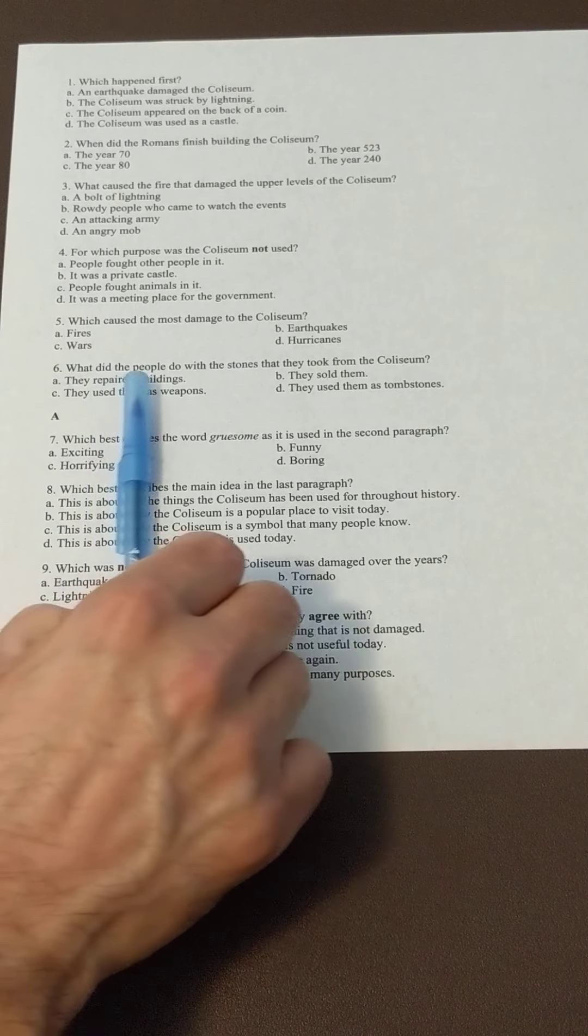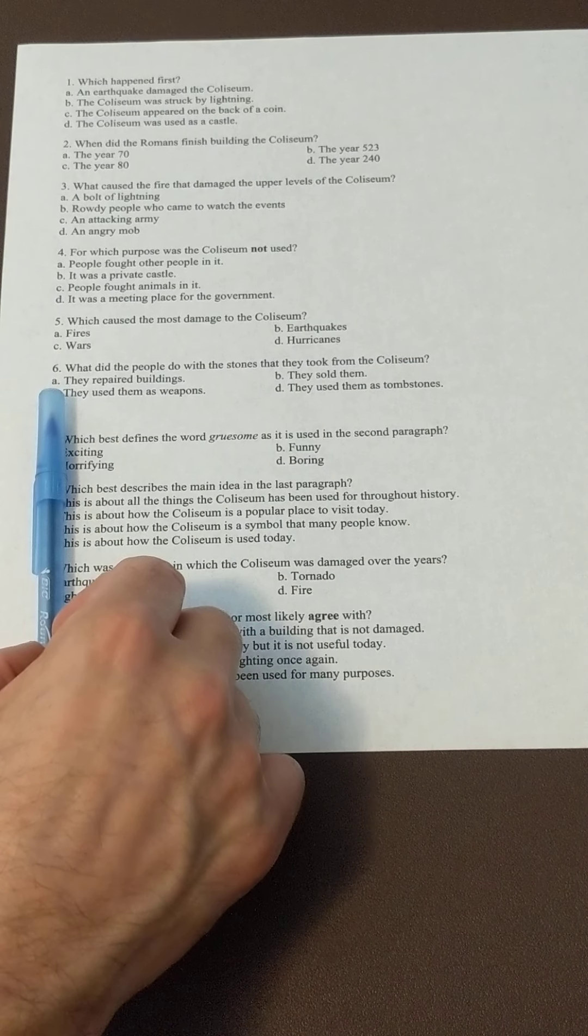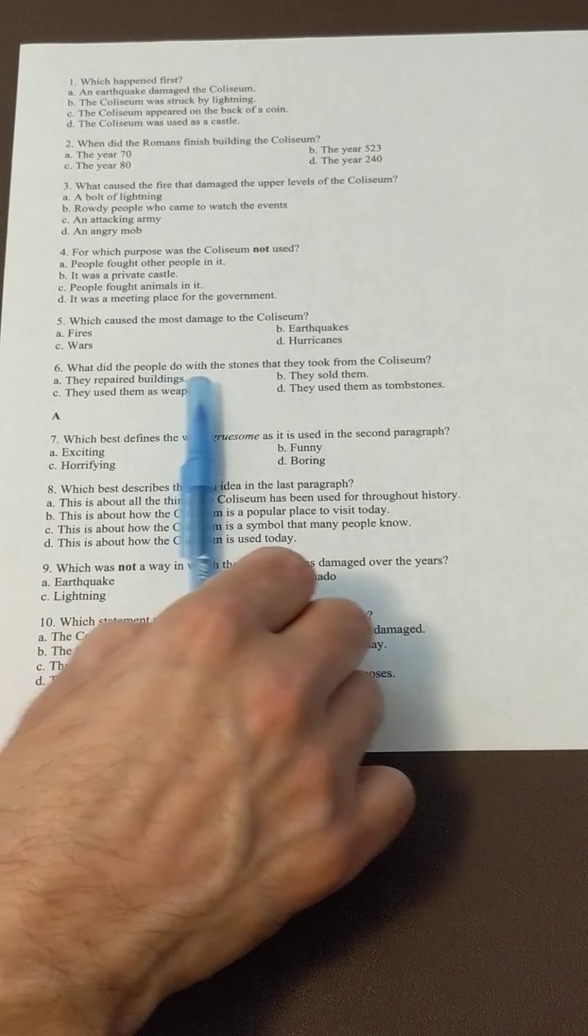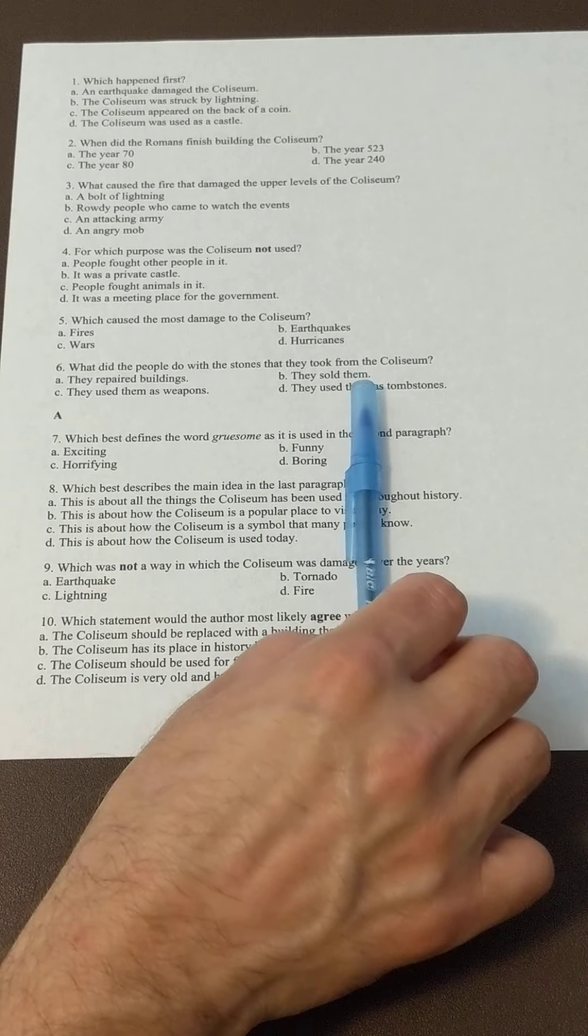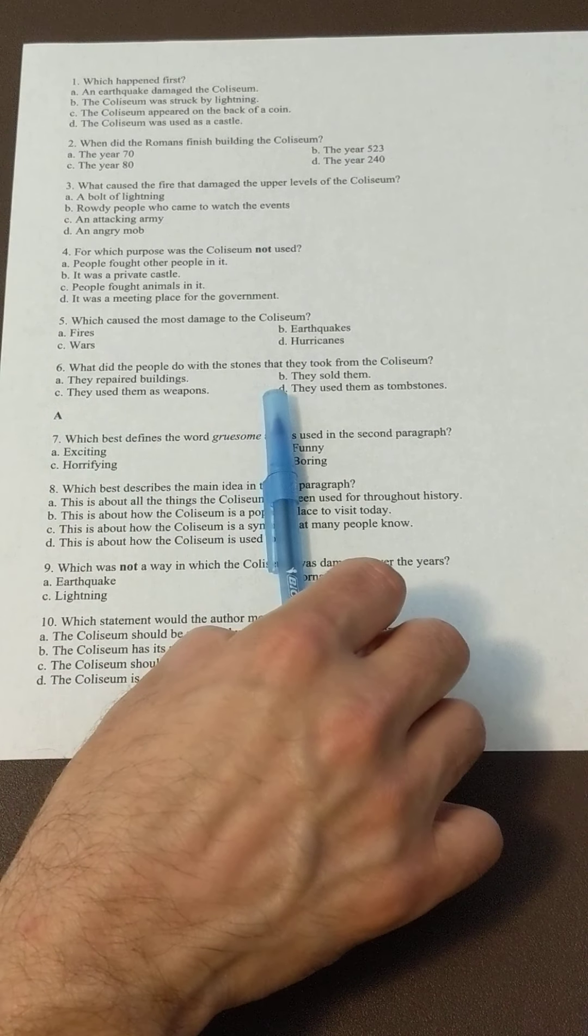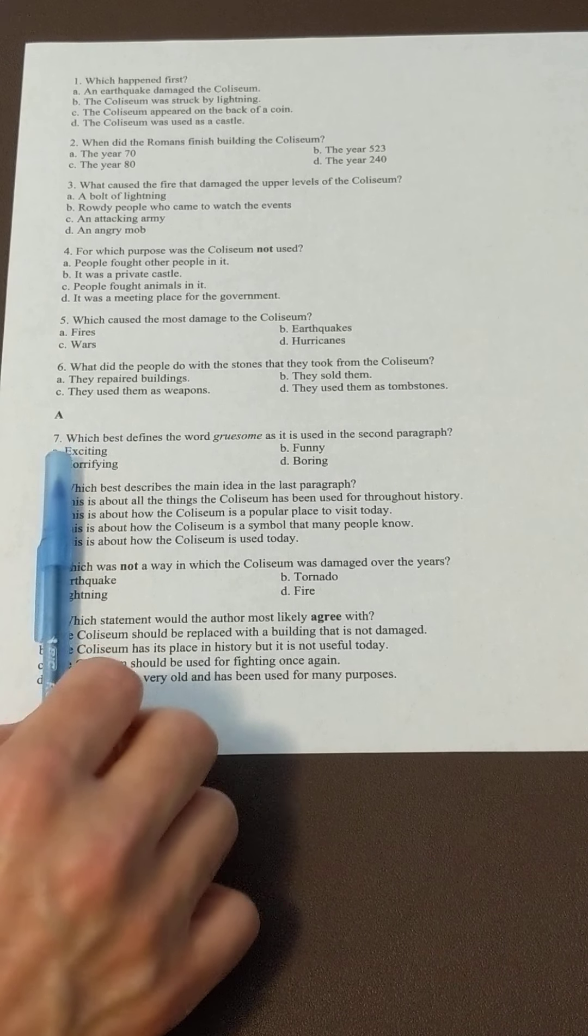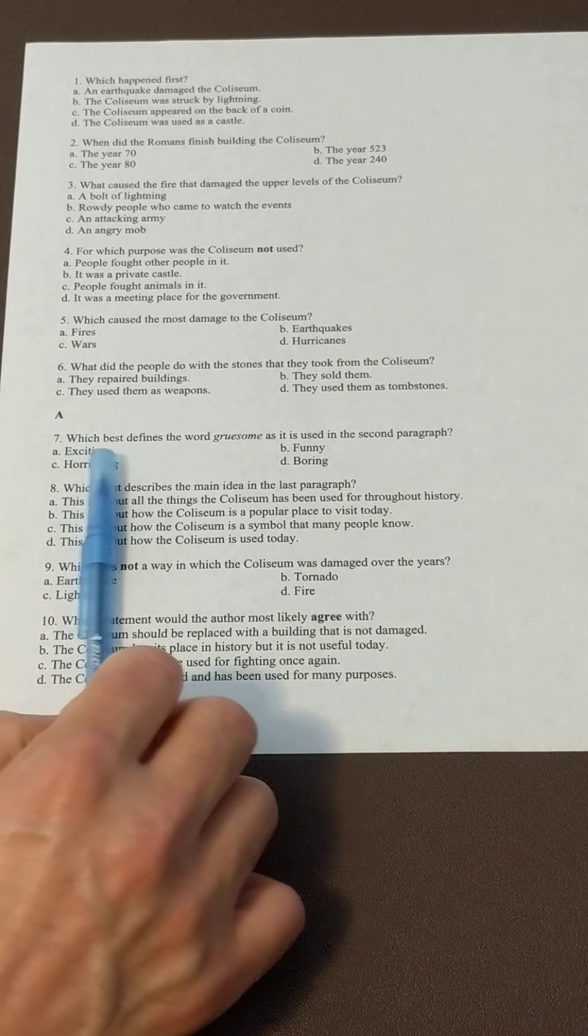Six: what did people do with the stones that they took from the Colosseum? A, they repaired buildings; B, they sold them; C, they used them as weapons; or D, they used them as tombstones. Seven: which best defines the